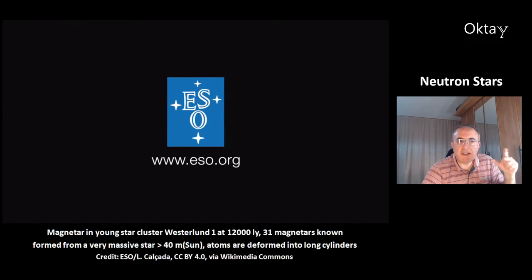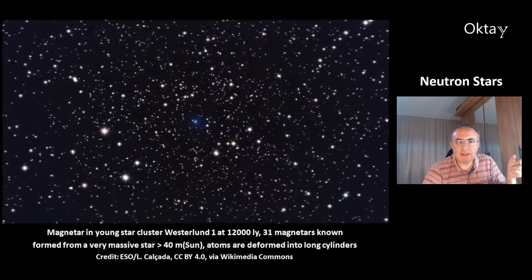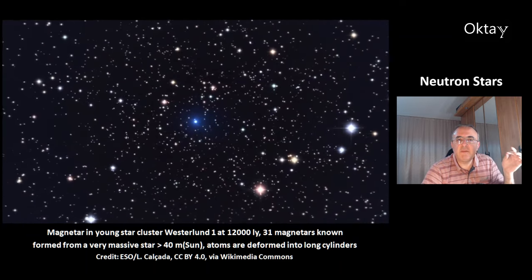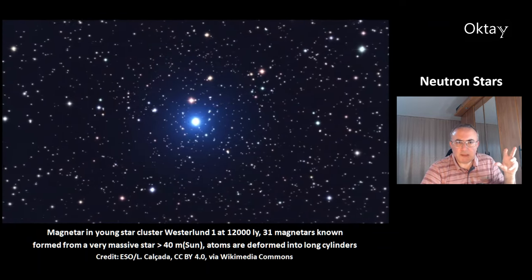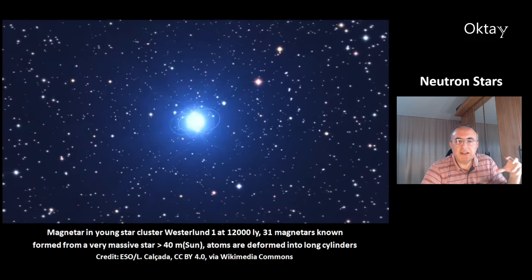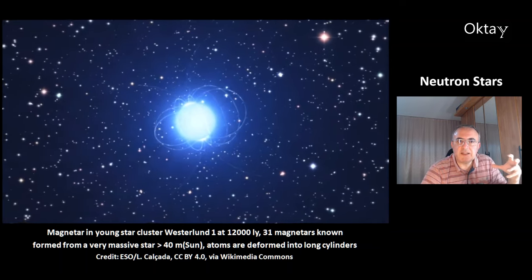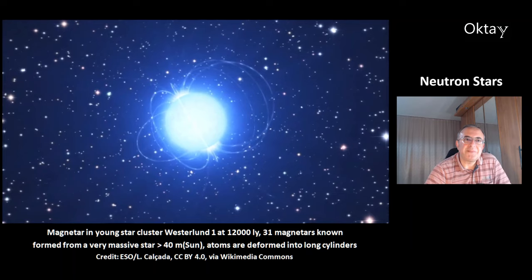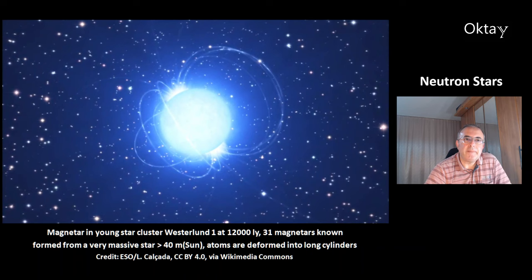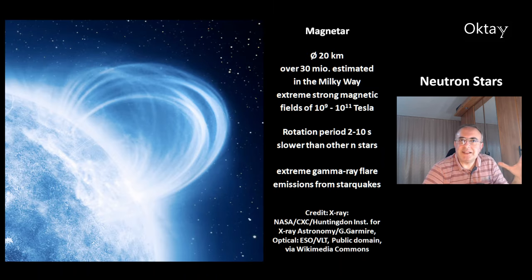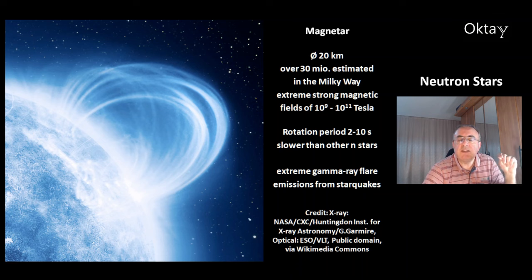This is another animation of a magnetar in the young star cluster Westerlund 1 at 12,000 light years distance. There are 31 magnetars known. They are formed from a very massive star of more than 40 solar masses. The atoms in a magnetar, due to the strong magnetic fields, are deformed into long cylinders. The surface of a magnetar is about 20 kilometers in size. There could be 30 million magnetars in the Milky Way galaxy. They have very strong magnetic fields of 10 to the 9 up to 10 to the 11 tesla, and their rotation period is 2 to 10 seconds — slower than other neutron stars. They experience star quakes, and the star quakes cause extreme gamma ray flare emissions.